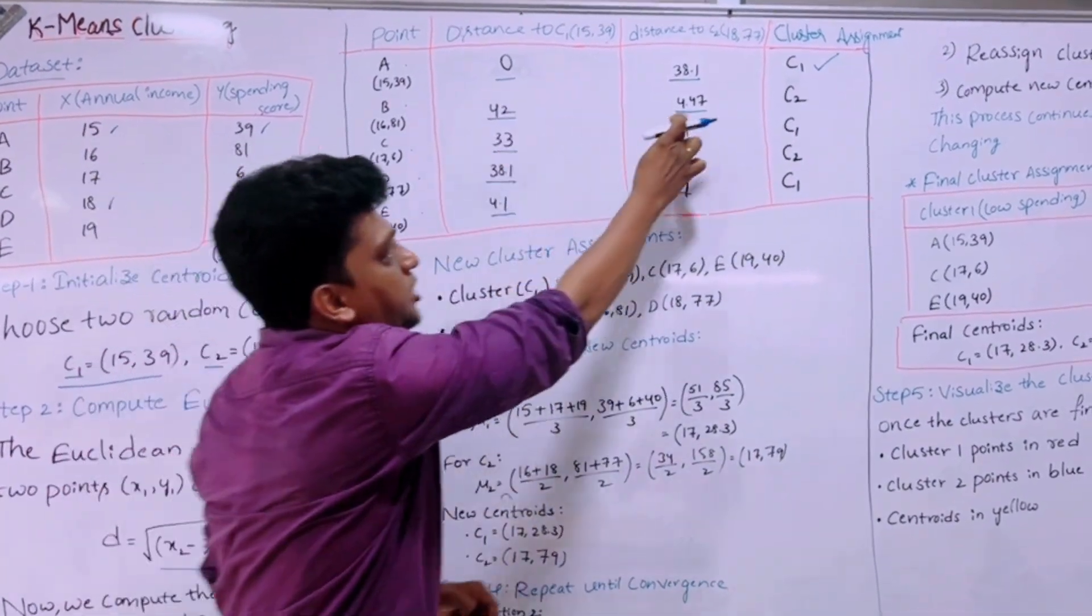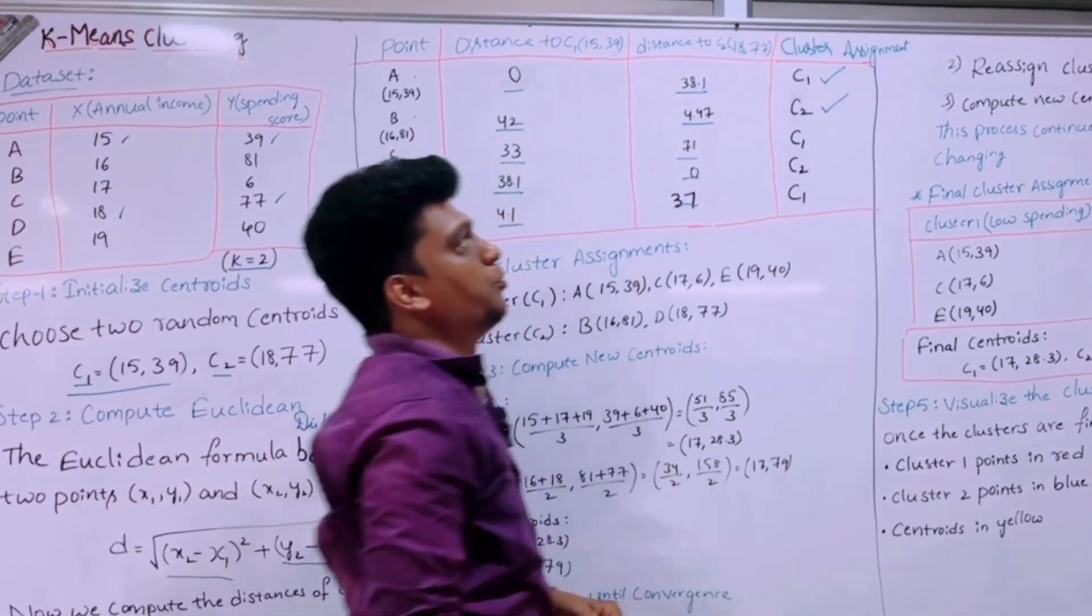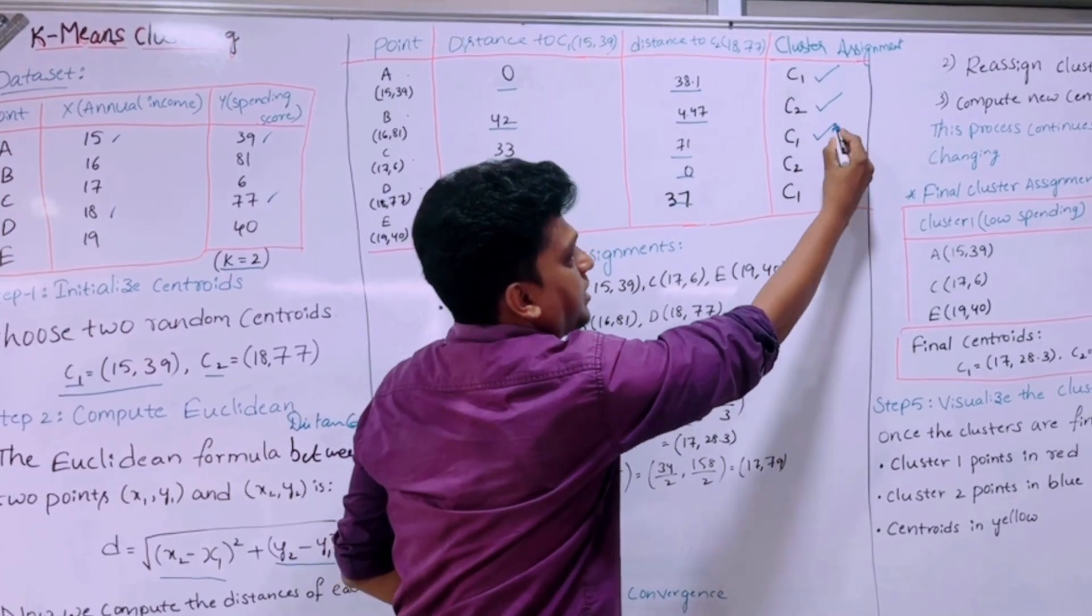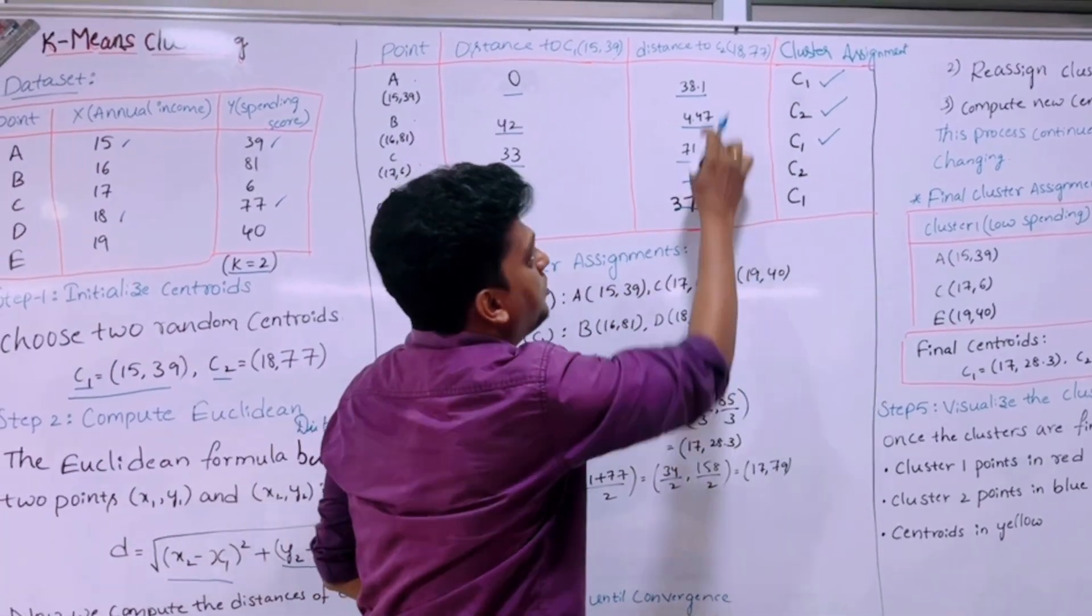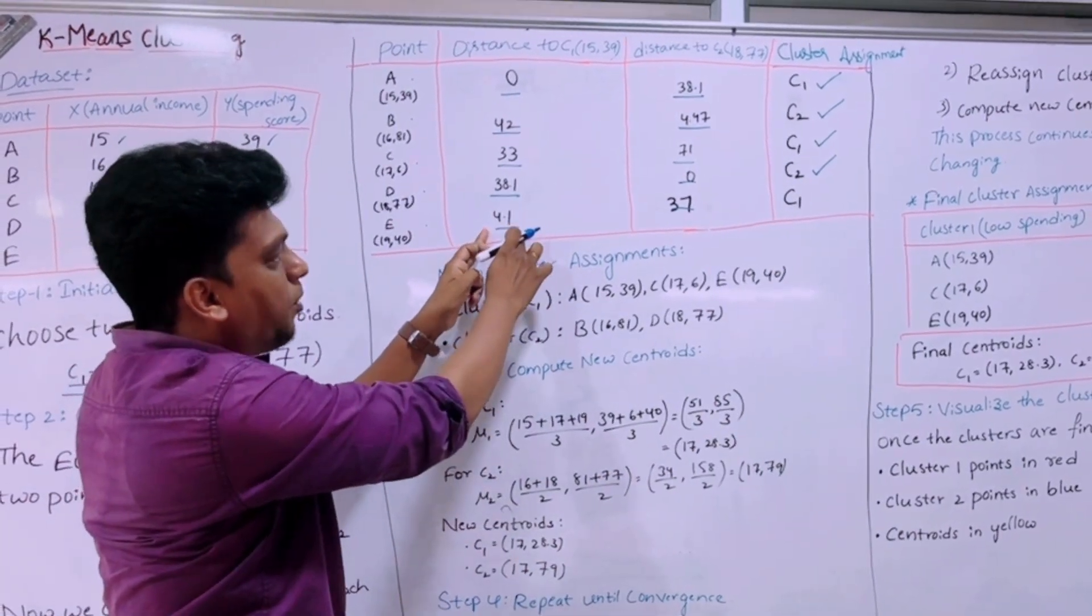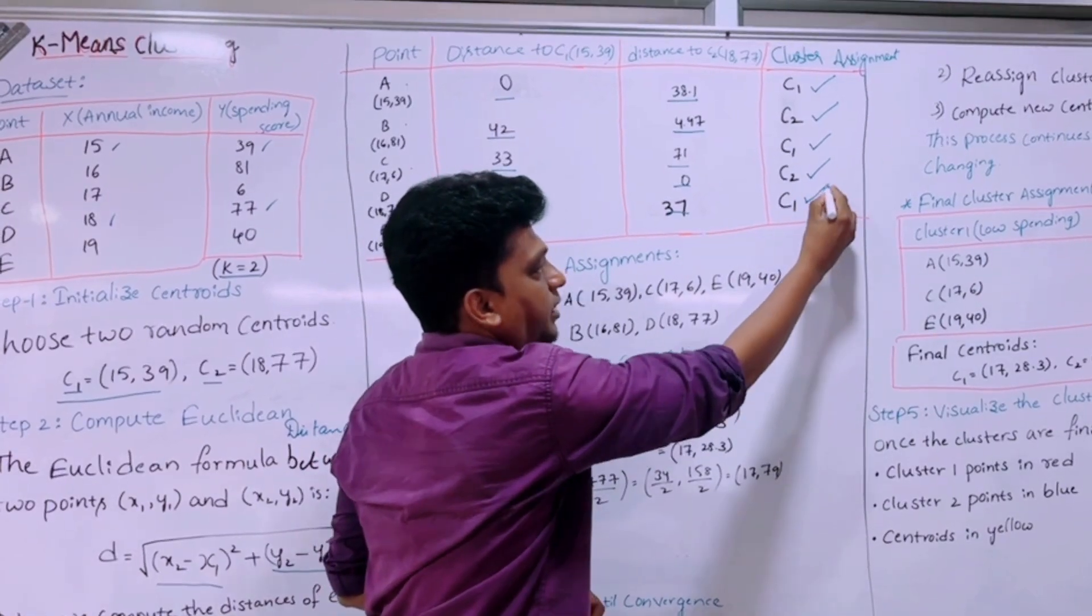Then here it is 42, it is 4.47, so this is minimum distance C2. Then it is 33 and it is 71, so this 33 is minimum distance, so C1. This is 38.1 and this is 0, so this one is the minimum distance C2. Here the distance is 4.1 and it is 37, so this is the minimum distance, so we are taking C1.